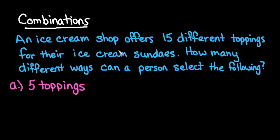Hi, for this video I'm going to show you how to find the number of combinations possible given a set number of objects. In this case, we have an ice cream shop that offers 15 different toppings for their ice cream sundaes. How many different ways can a person select the following?